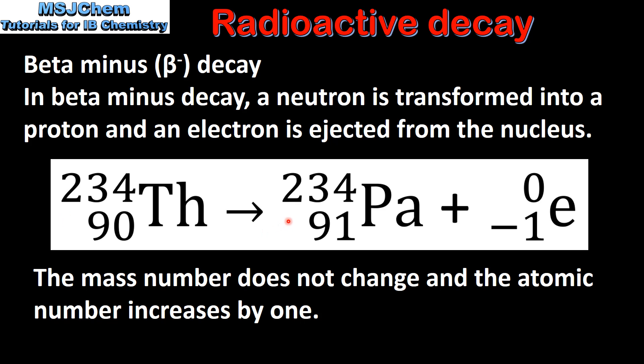The products are protactinium-234 and an electron which is ejected from the nucleus. As we can see from the nuclear equation, the mass number does not change and the atomic number increases by 1.